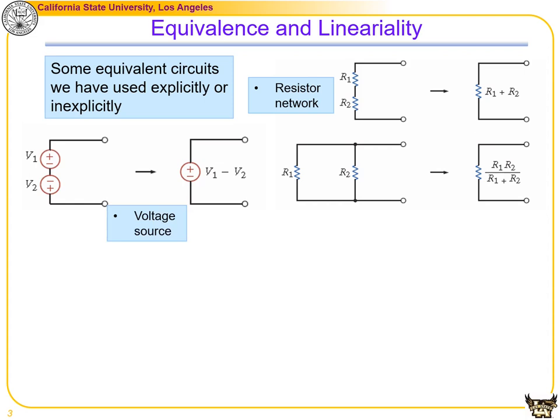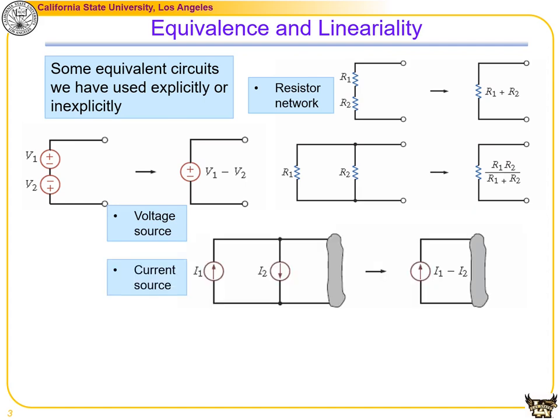For voltage sources, if we have two voltage sources in series, that is equivalent to a single voltage source with the linear algebraic summation of the two voltages. For current sources, if we have two current sources in parallel, the equivalent current source is equal to the algebraic summation of the two.